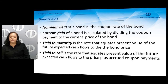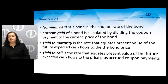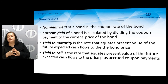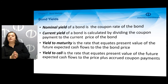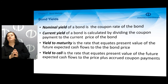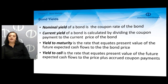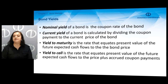An important term is yield to maturity. Yield to maturity is an interest rate which equates the present value of the future expected cash flows — the real value of the bond — to the price of the bond. We find this real value and search for the discount rate that makes it equal to the bond price. Yield to call, on the other hand, is the rate that equates the present value of the future expected cash flows to the price plus the accrued coupon payments.